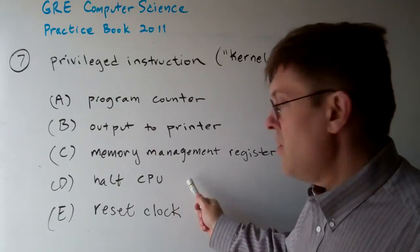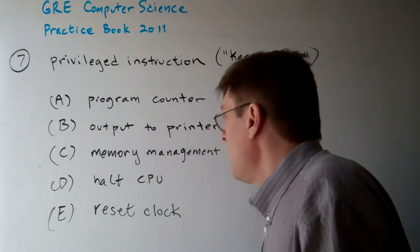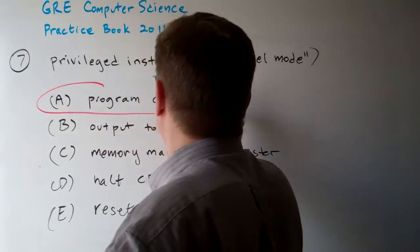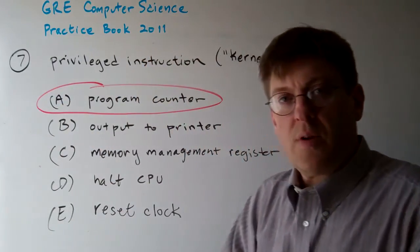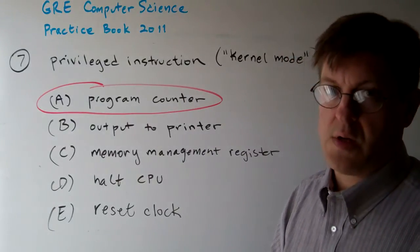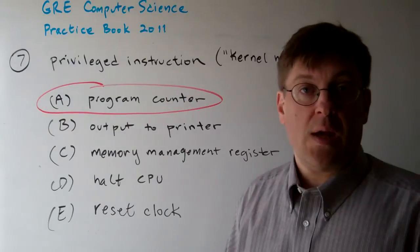Halting the CPU is the CPU hardware, and then resetting the computer clock is hardware also. So the answer is just updating the program counter. That is least likely to be a privileged instruction. It doesn't require going to the hardware. It doesn't require special security or protection. So the answer to 7 is A.